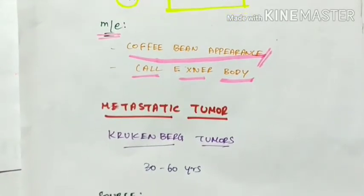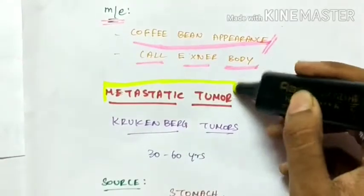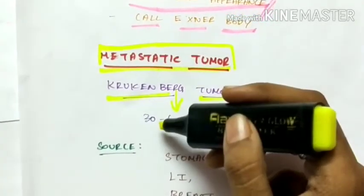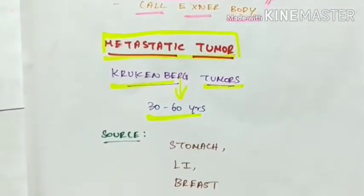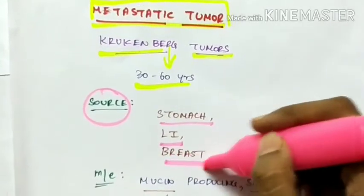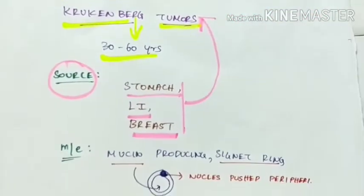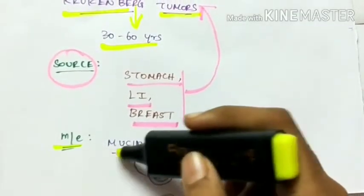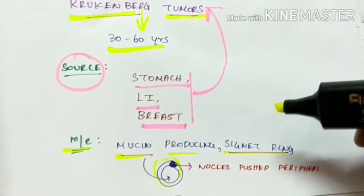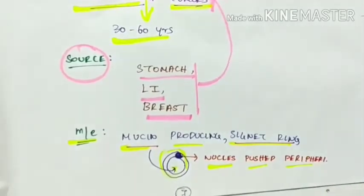The other sex cord tumors — Sertoli cell tumor, Leydig cell tumor, and Sertoli-Leydig cell tumors — are seen in males. The last is metastatic tumor, which comprises Krukenberg tumors. Krukenberg tumors are common in the age group of 30 to 60 years. The source from which it is metastasized are the stomach, large intestine, and the breast. Microscopically, it consists of mucin-producing signet ring cells in which the nucleus is pushed to the periphery.